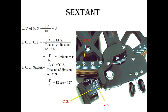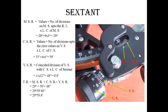Here I am showing how to read the sextant. First, read the main scale: take the value plus the number of divisions on the main scale up to the reference line, multiplied by the least count of the main scale. Here: 20 plus 1, 2, 3, 4, 5, 6, 7, 8, 9 — that is 9 divisions — 9 multiplied by 1 degree equals 29 degrees. That is the main scale reading.